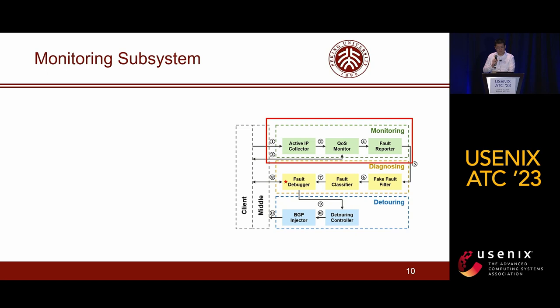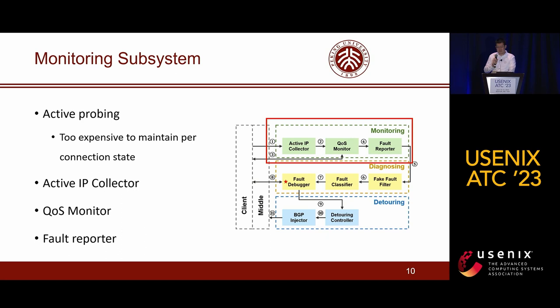The first subsystem, namely the monitor subsystem, uses active probing for fault monitoring, as it is too expensive to maintain per-connection state for a large cloud. To further reduce the probing cost, AutoArcical Appeals only probes IPs with user traffic. The subsystem consists of three modules: an active IP collector, the QoS monitor, and the fault reporter.